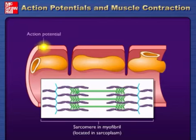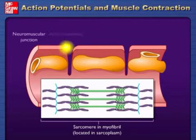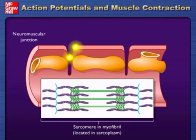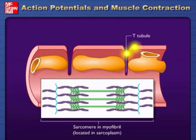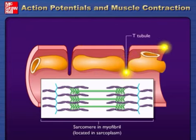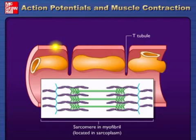An action potential introduced at the neuromuscular junction is propagated along the sarcolemma of the skeletal muscle. At the T-tubule, the action potential is propagated on the T-tubule membrane into the interior of the muscle cell near the ends of the sarcoplasmic reticulum.